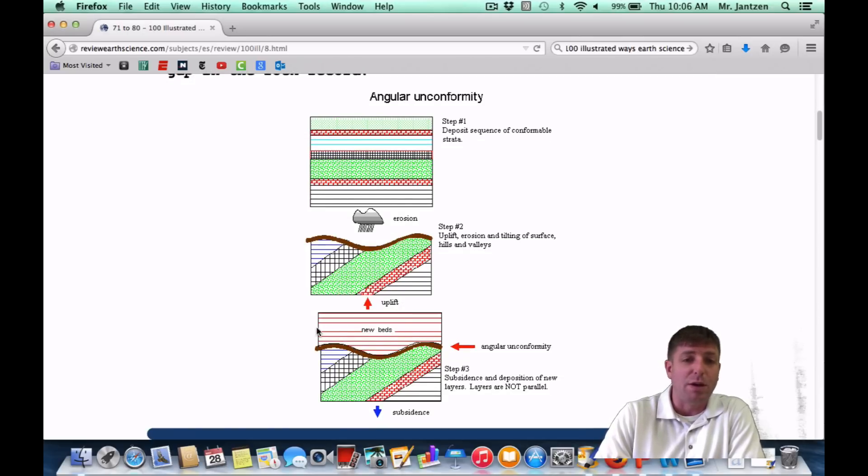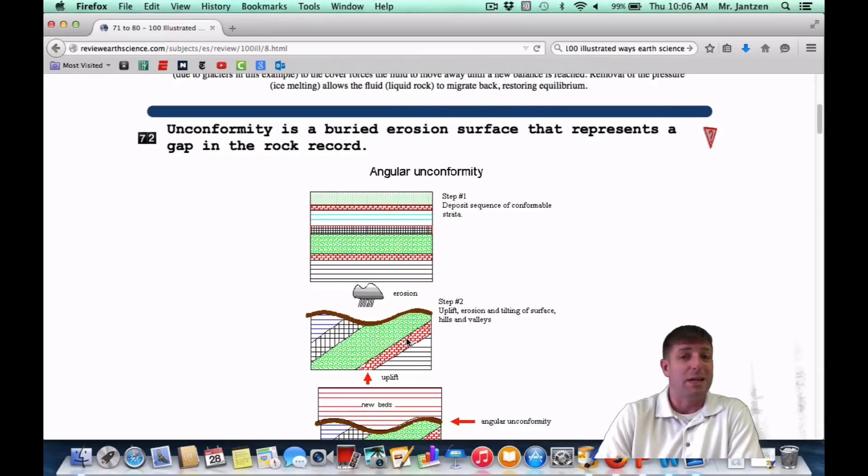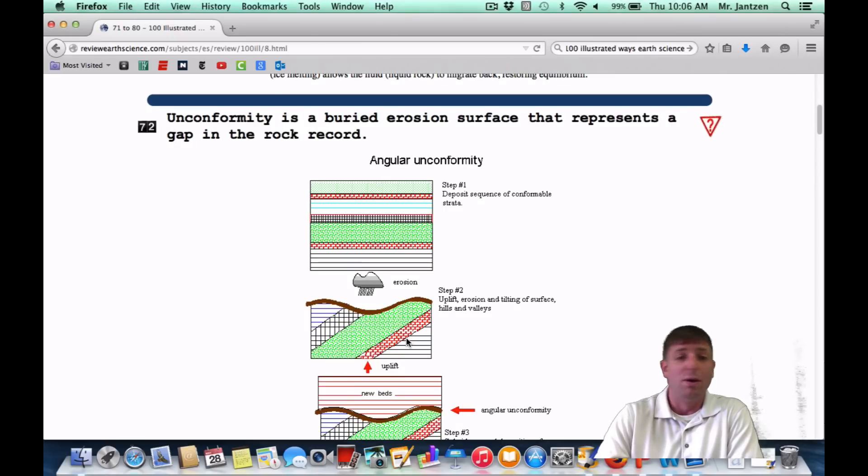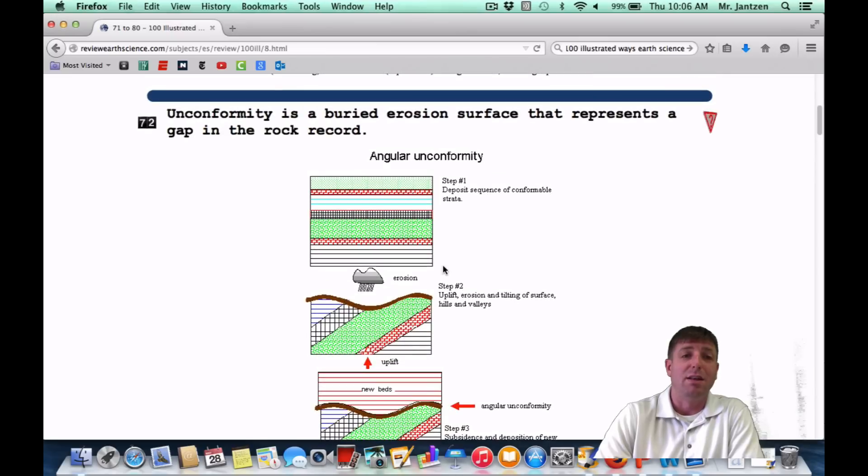You have a nice sequence here, then you have the uplift and erosion that occur right here. And then all of a sudden, you'll have some sinking down, maybe even falling beneath sea level, and then you have new layers put on here. So it actually looks like there's a missing layer. With an unconformity, you want to know three steps: uplift, erosion, and submergence or subsidence. Those are the three steps in the formation of an unconformity.